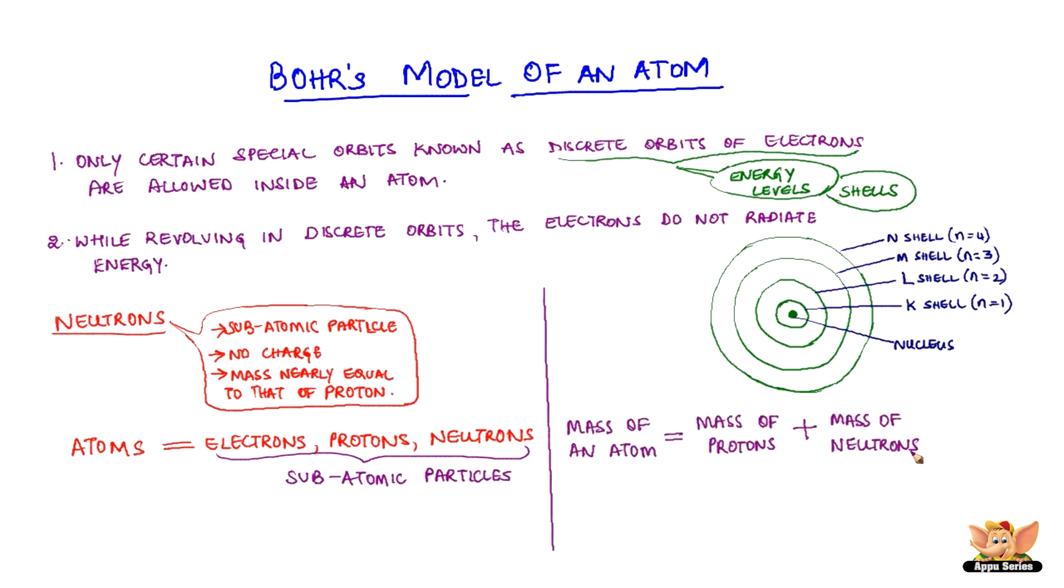The mass of an atom is given by the sum of the masses of protons and neutrons present in the nucleus.